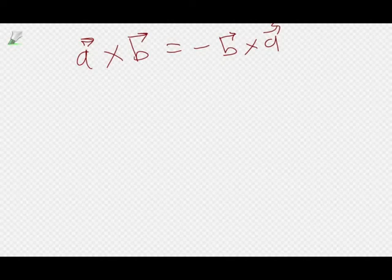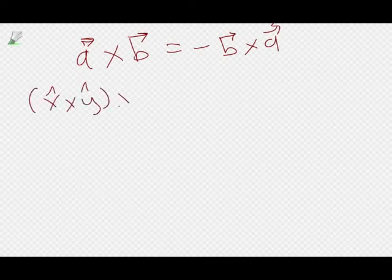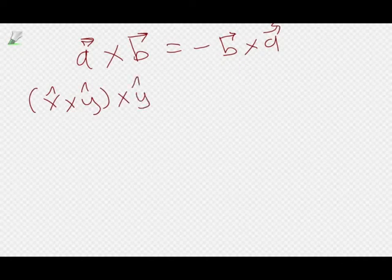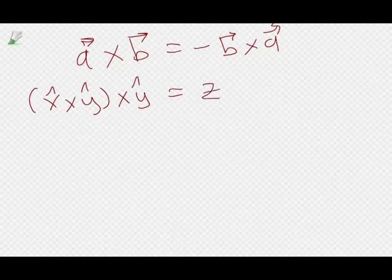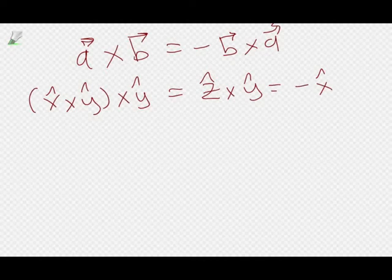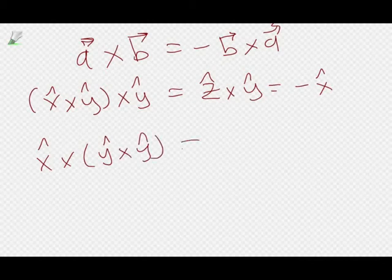Just as an example, if I do X hat cross Y hat cross Y hat, right, if I do that, well, X hat cross Y hat is Z hat. So we'll get Z hat cross Y hat, which is minus X hat. But if I associated it differently, X hat cross Y hat cross Y hat, well, Y hat cross Y hat is zero. So the associative principle does not apply for cross products. So you need to be a little bit careful about that.